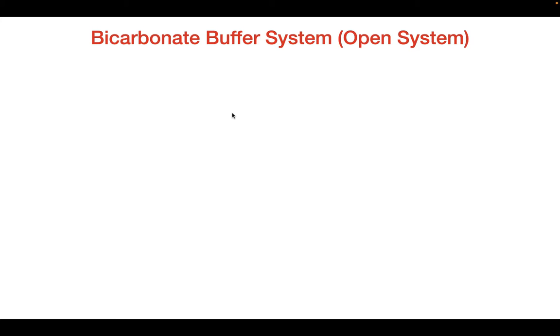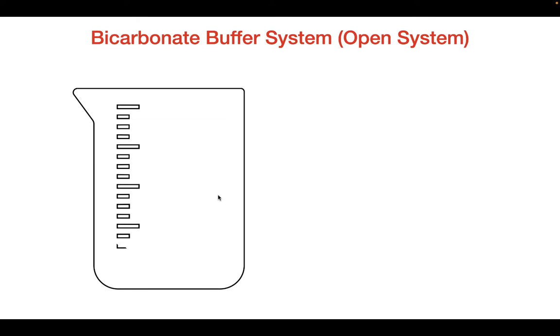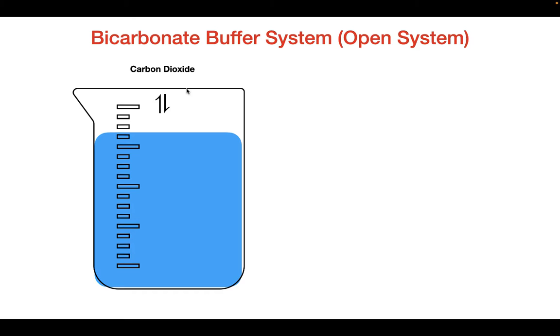Now we're going to look at the bicarbonate buffer system, which is an example of an open system in our bodies. Let's just imagine you have a beaker and inside the beaker you have water. Outside the beaker you have carbon dioxide and this carbon dioxide is in equilibrium with the carbon dioxide dissolved inside the liquid. So how does this actually form a buffer?